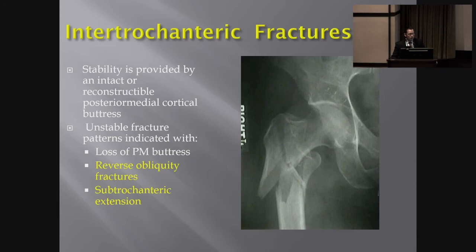Here is an unstable fracture. The issue is the fracture pattern as it extends into the shaft. This is called a reverse obliquity pattern — a typical fracture goes from the greater to the lesser trochanter, but when it goes in the opposite direction it signifies more instability because of bone quality and the lack of posterior medial buttress.